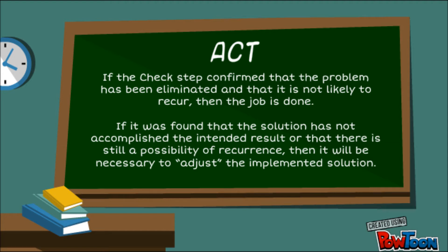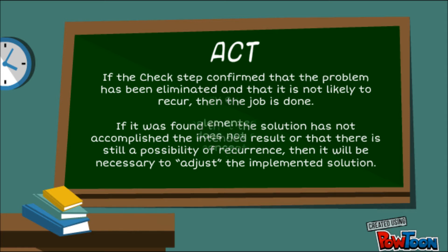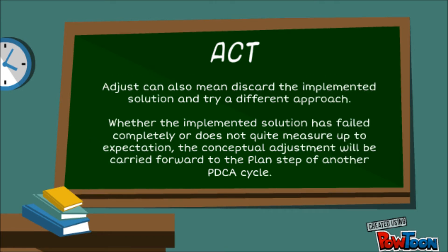The fourth stage of the PDCA cycle is Act, also called Adjust. If the check step confirmed that the problem has been eliminated and that it is not likely to recur, then the job is done. If, however, it was found that the solution has not accomplished the intended result or that there is still a possibility of recurrence, then it will be necessary to adjust the implemented solution. Adjust can also mean discard the implemented solution and try a different approach. Whether the implemented solution has failed completely or does not quite measure up to expectation, the conceptual adjustment will be carried forward to the plan step of another PDCA cycle.